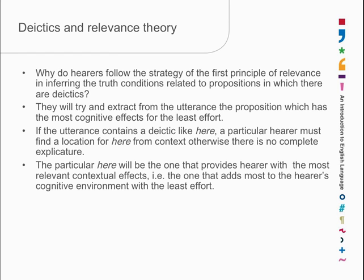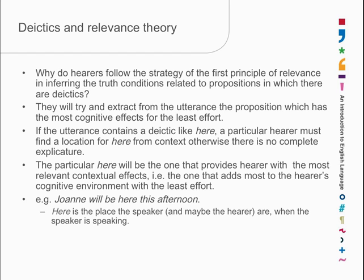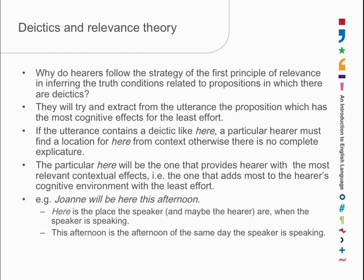'Here' is the one which provides the hearer with the most relevant contextual effects — the one that adds the most to the hearer's cognitive environment with the least effort. So if we've been talking for a while and I say 'Joanne will be here this afternoon', 'here' is the place the speaker and maybe the hearer are when the speaker is speaking, and 'this afternoon' will be the afternoon of when I'm speaking. Both those deictics have to be interpreted in context to provide a physical location and an actual time.